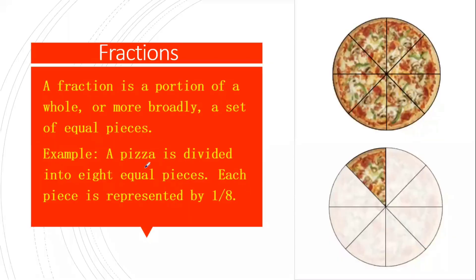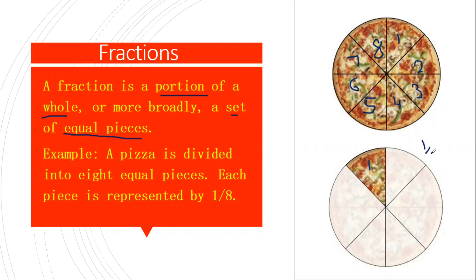So what is a fraction basically? A fraction is a portion of a whole, or we can say that it is a set of equal pieces. Here, there is a pizza, and this pizza has been divided into eight equal parts — one, two, three, four, five, six, seven and eight. So each piece is a fraction, and each piece is represented by one by eight. So one by eight is a fraction.